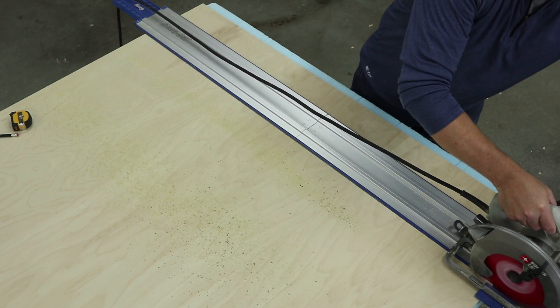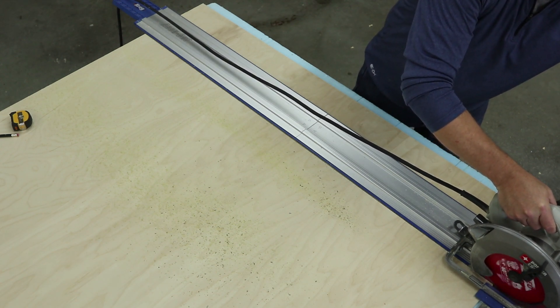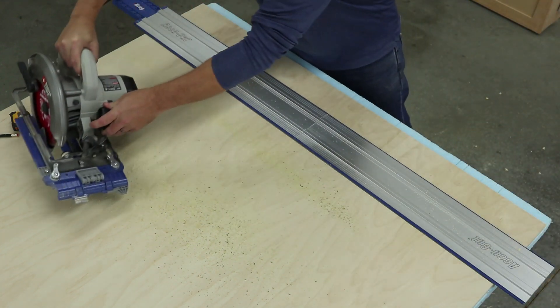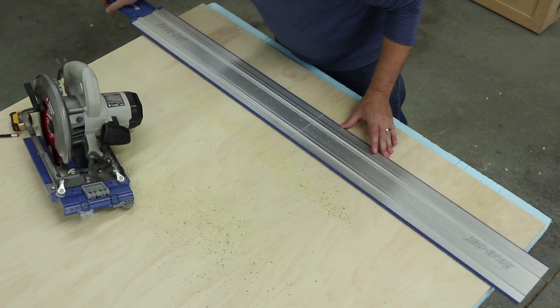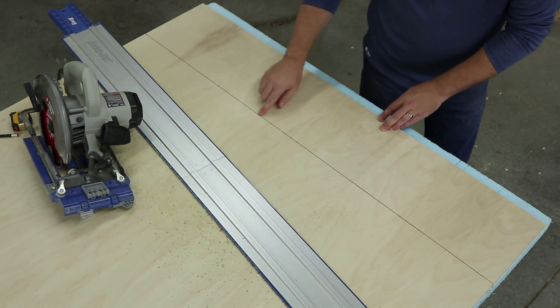The sled that holds the saw follows the track exactly as you cut, while guide strips under the track hold it in place. With a track guide like the AccuCut, you get a nice straight cut and a very clean edge.